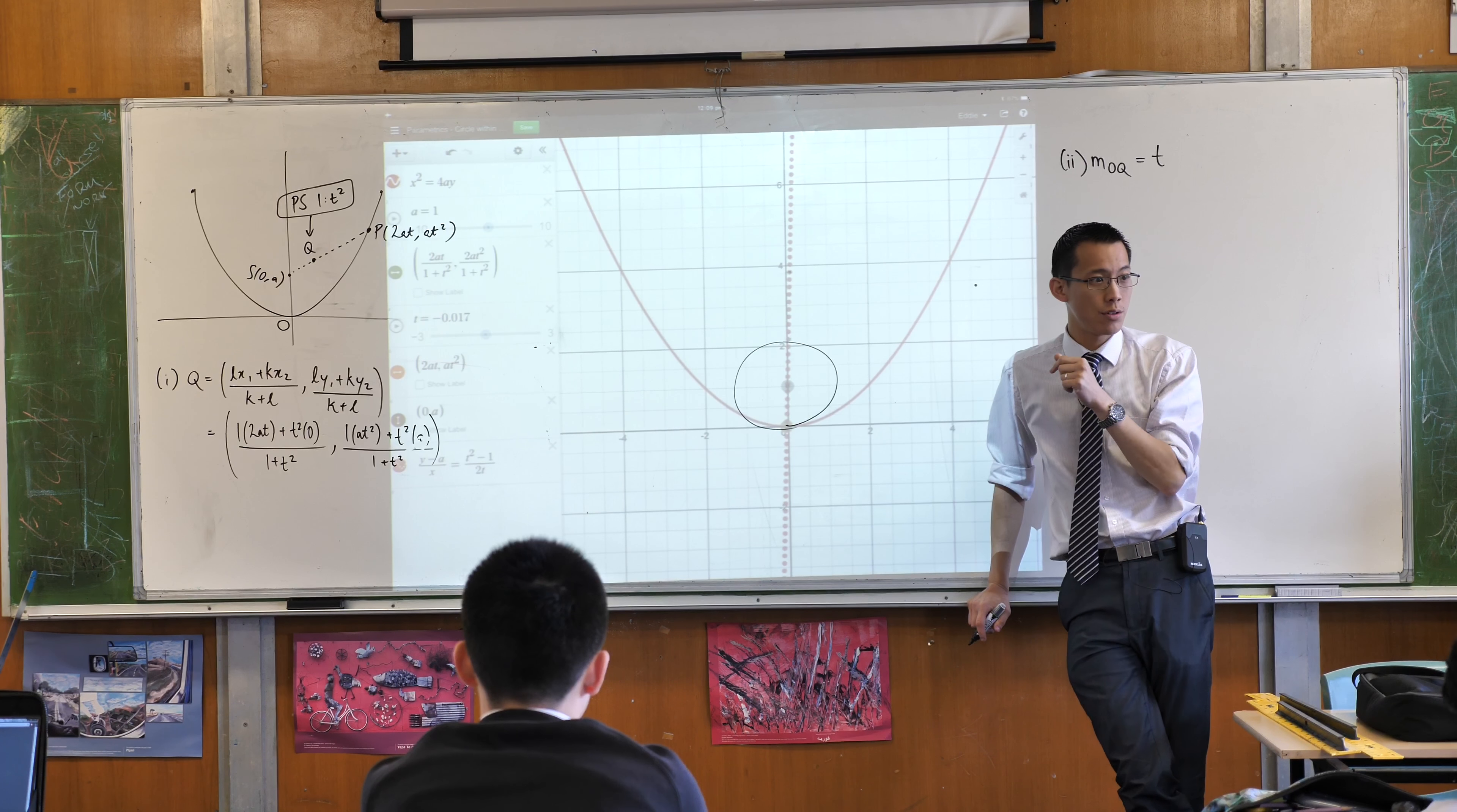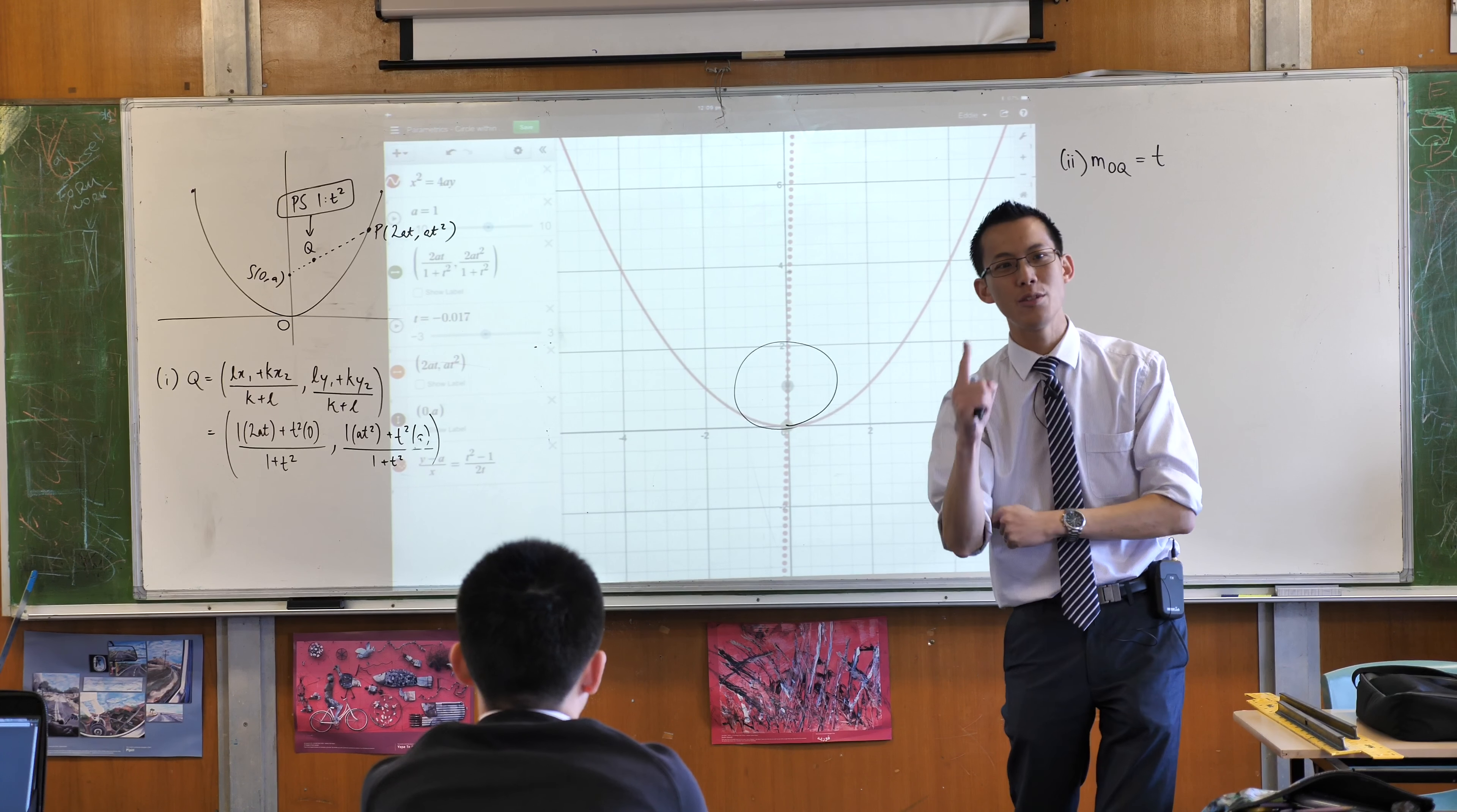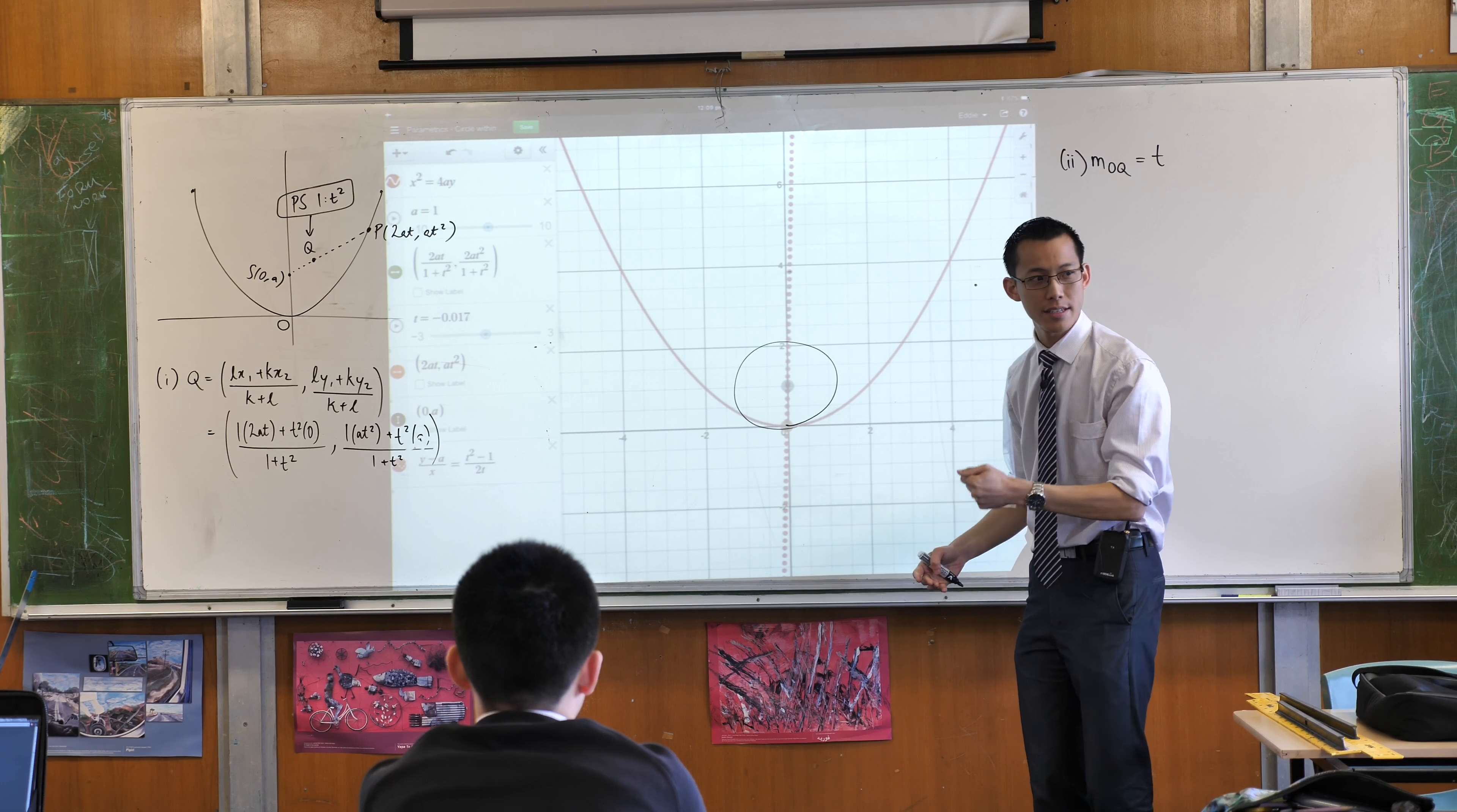Now, go back to the question. You have the question in front of you, right? They tell you it's a circle, and they tell you one, and only one other piece of information about it. What do they tell you? Radius A.